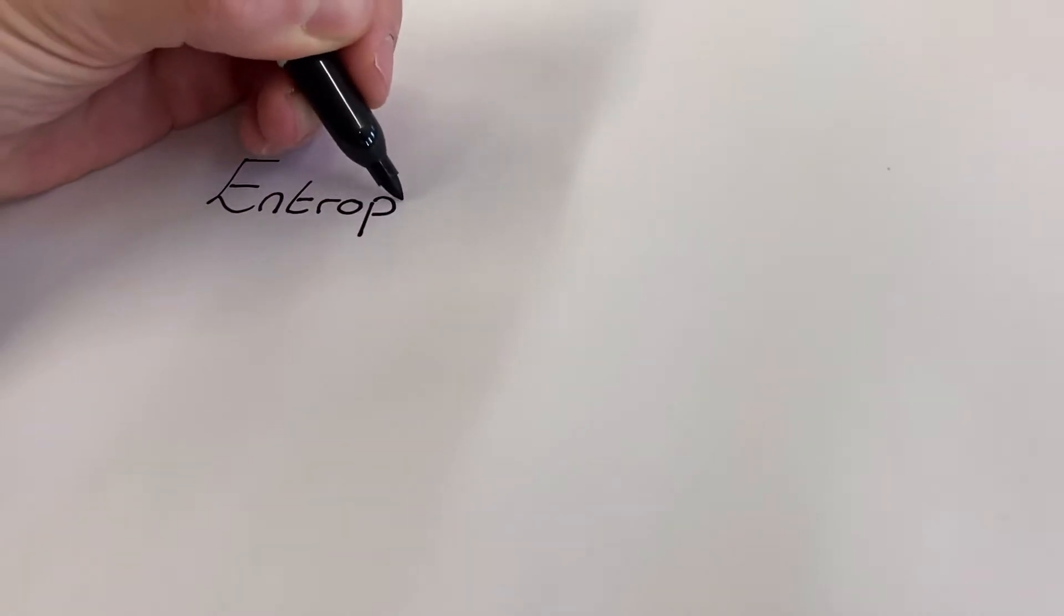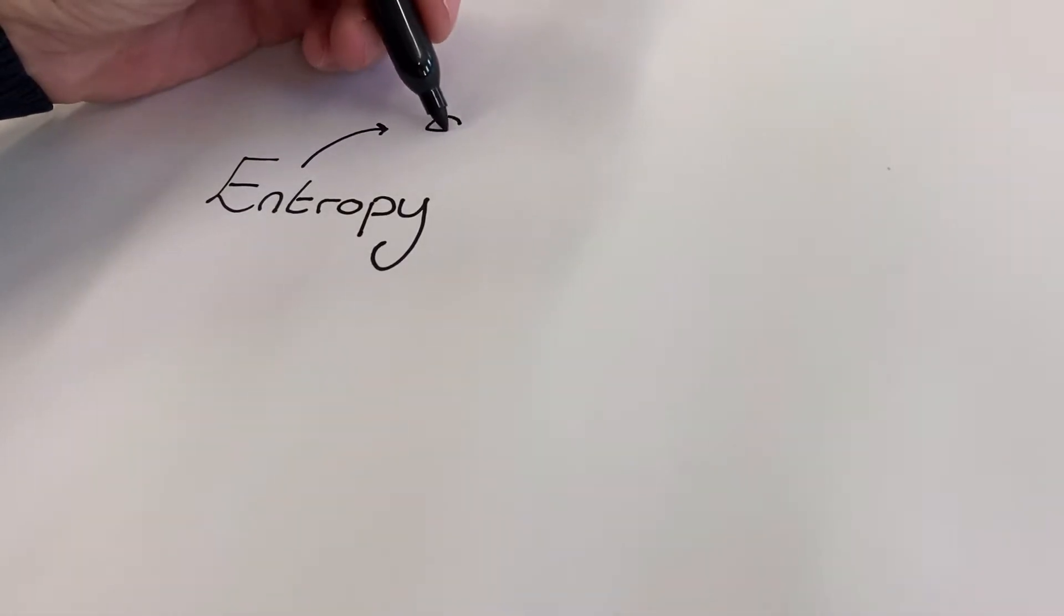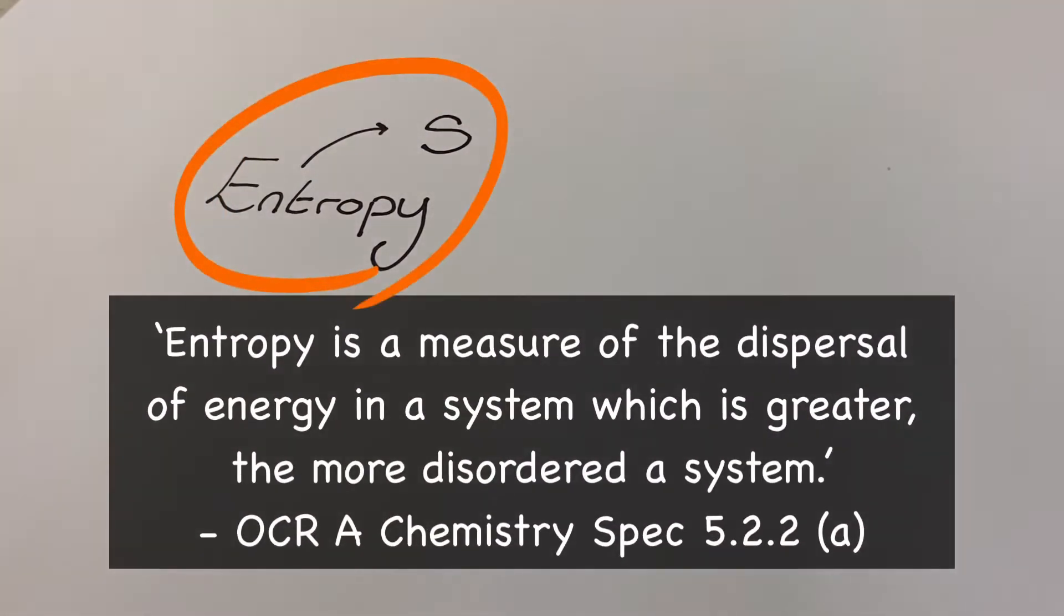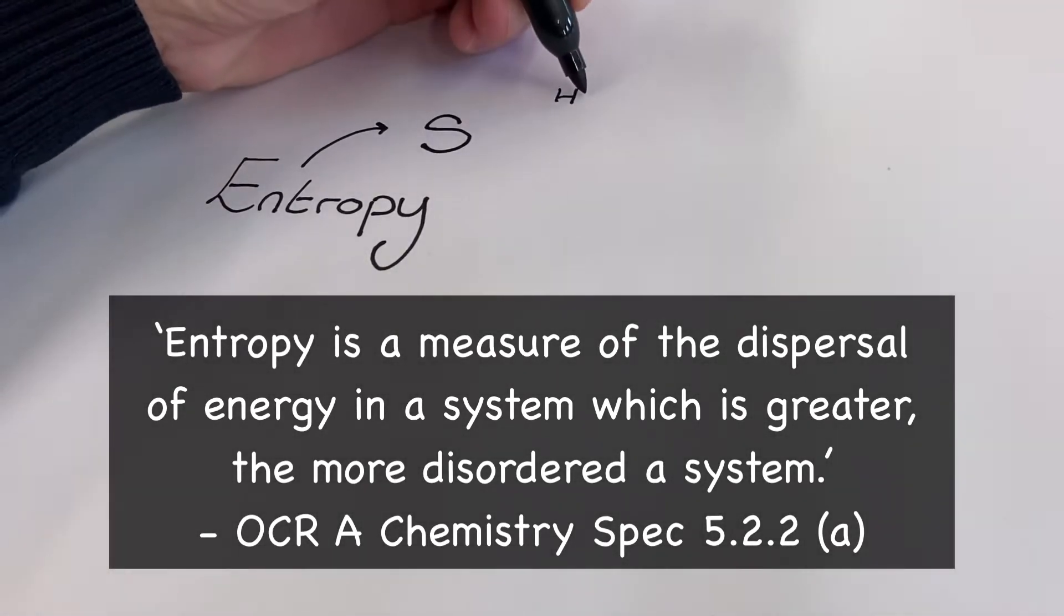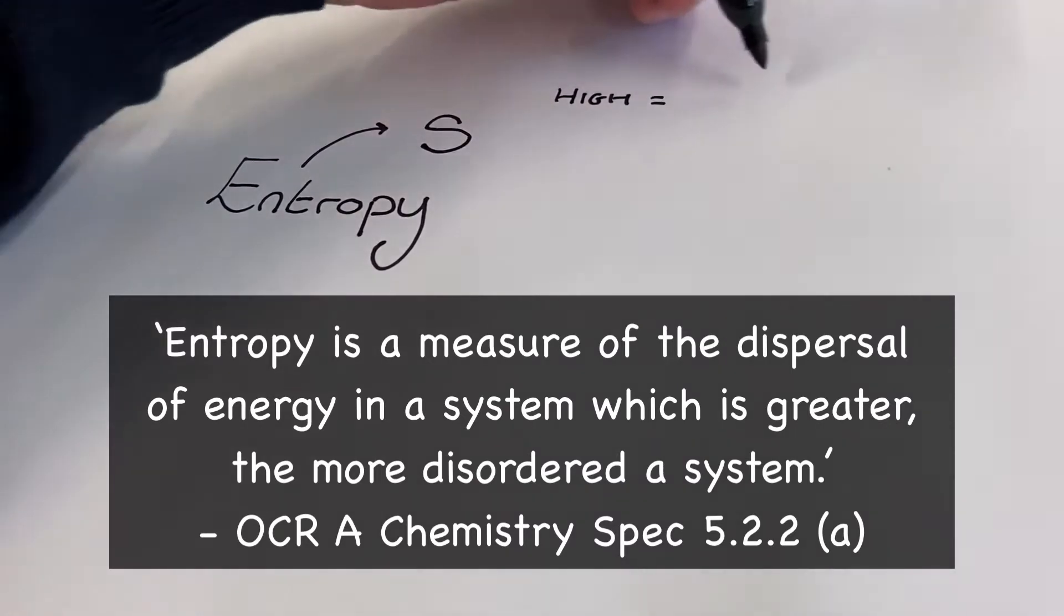So before we look at Gibbs free energy and entropy change, let's actually start with a definition of entropy. For entropy, we use the symbol of a capital S, and we define entropy as a measure of the dispersal of energy in a system which is greater the more disordered a system. Entropy is essentially a measure of how random a system is. It can tell you about that scale of disorder.